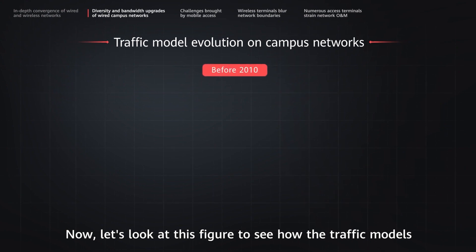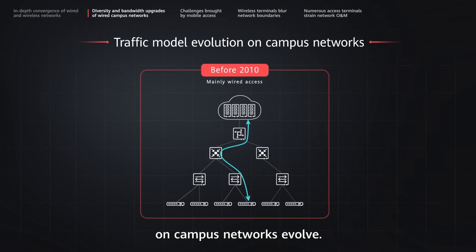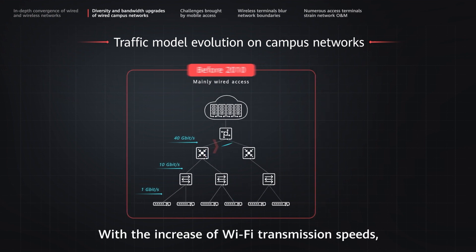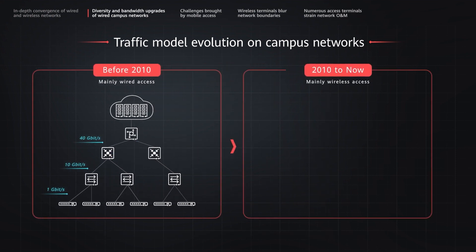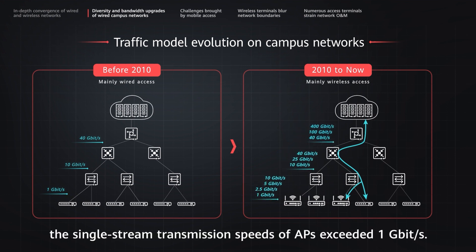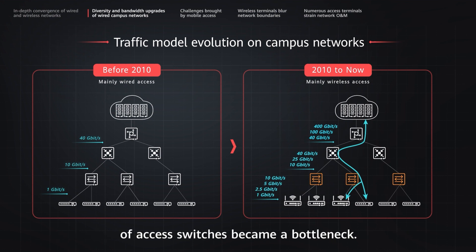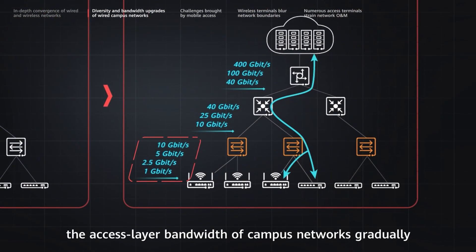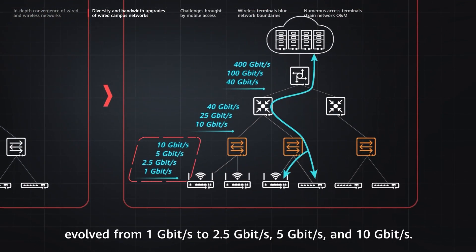Let's look at this figure to see how the traffic models on campus networks evolve. Prior to 2010, the access layer bandwidth of most campus networks remained 1 gigabit per second. With the increase of Wi-Fi transmission speeds, especially after the advent of Wi-Fi 6 in the recent two years, the single stream transmission speeds of APs exceeded 1 gigabit per second, meaning the transmission speeds of access switches became a bottleneck. To overcome this bottleneck, the access layer bandwidth of campus networks gradually evolved from 1 gigabit per second to 2.5 gigabits per second, 5 gigabits per second, and 10 gigabits per second.